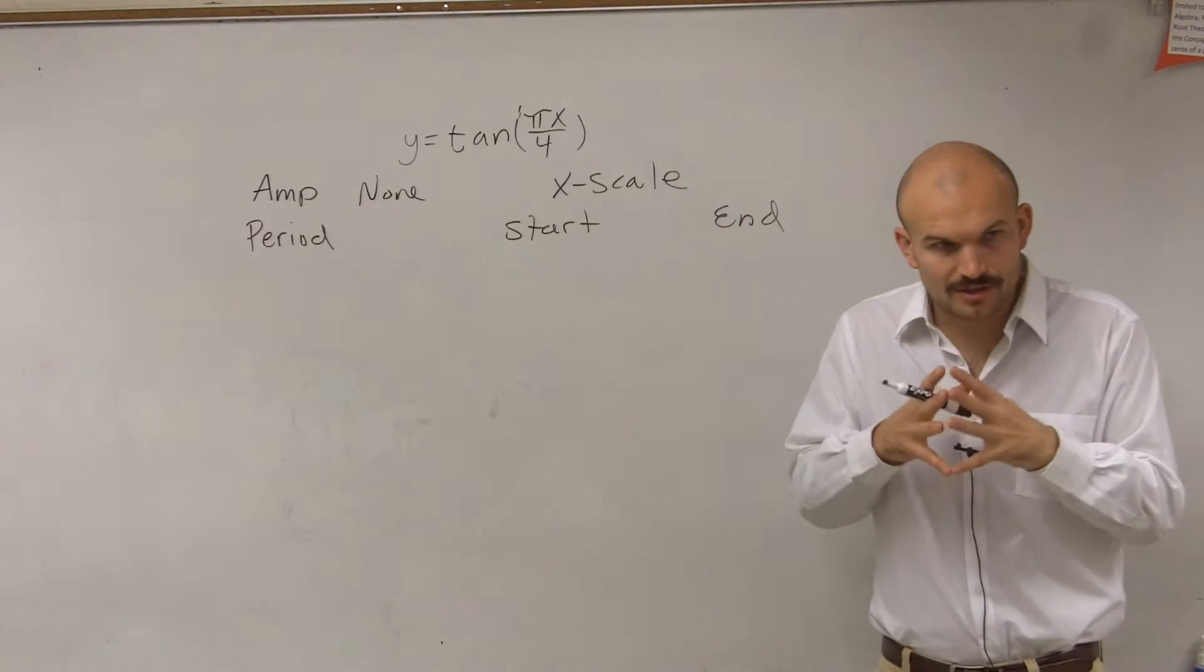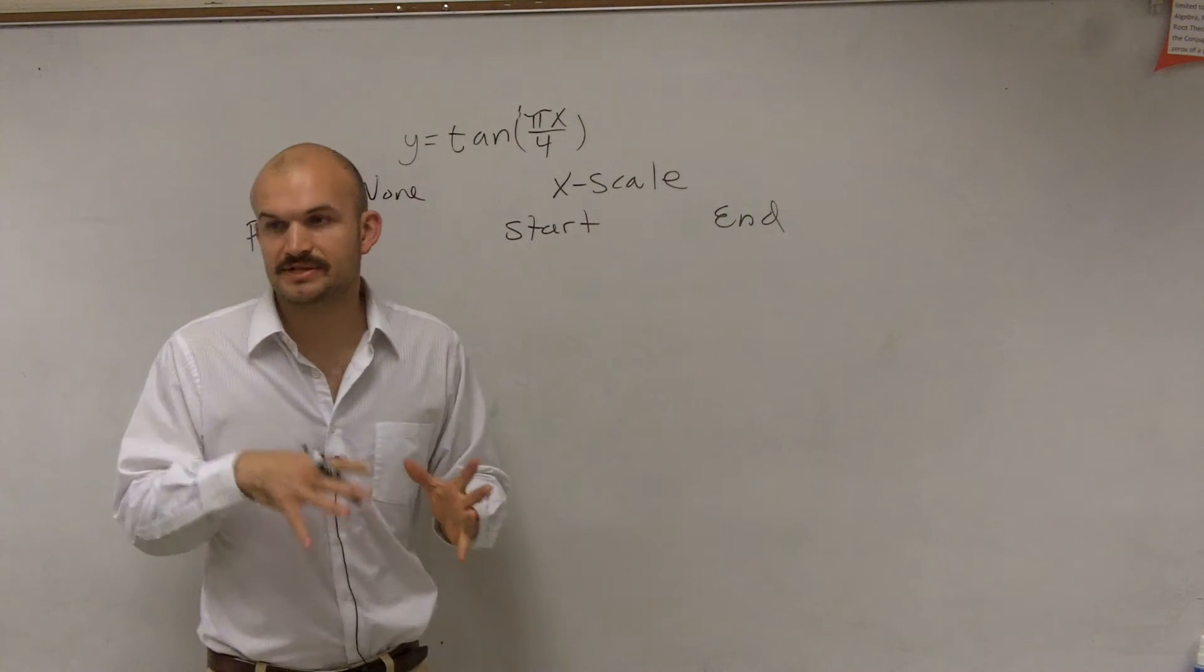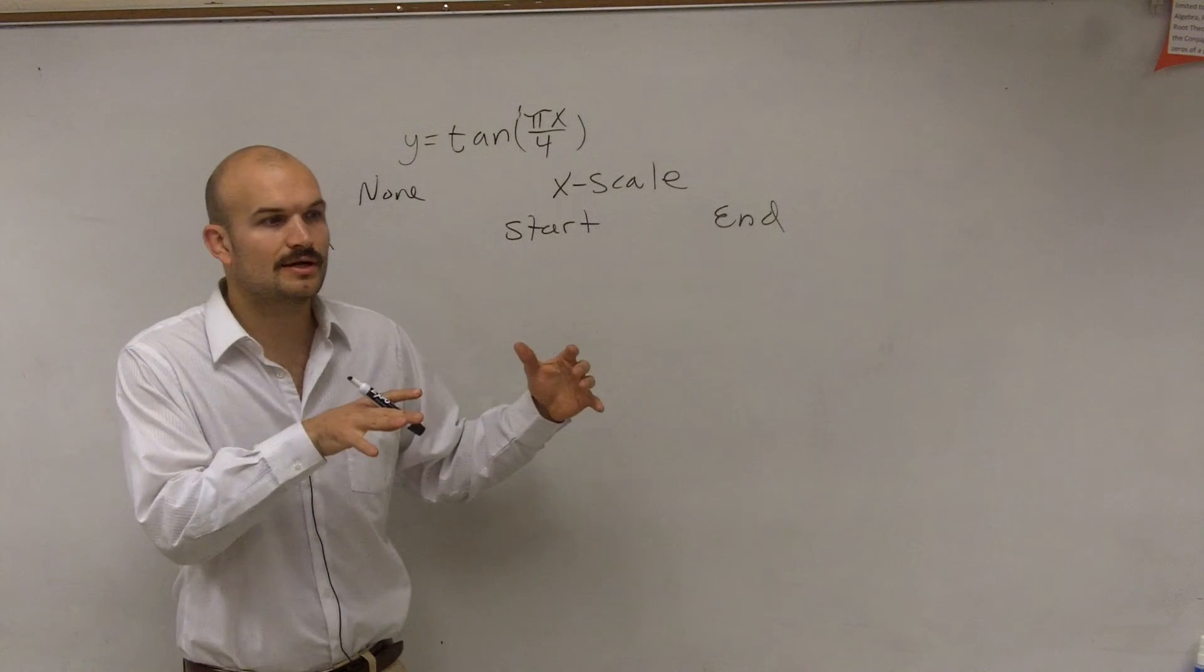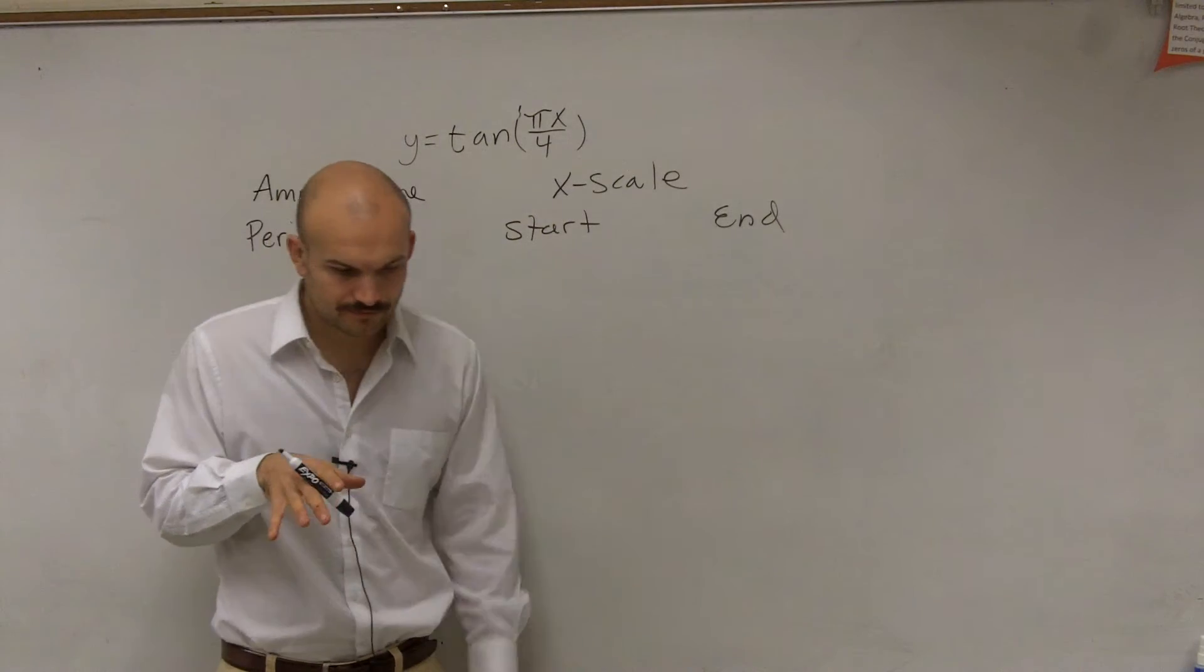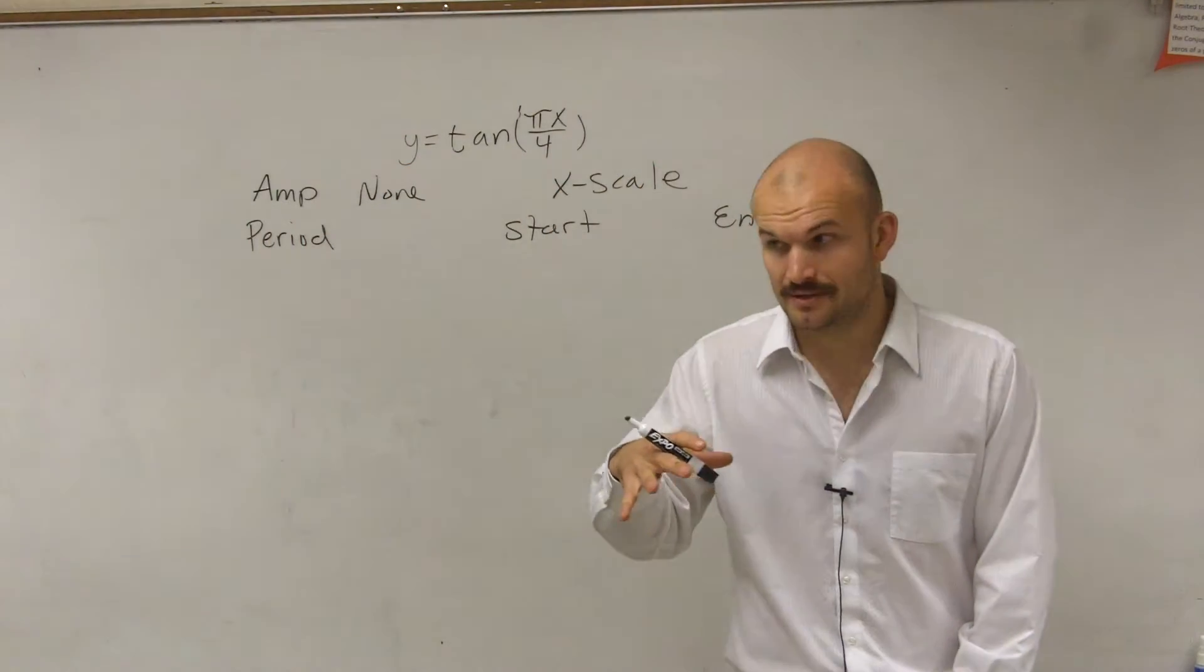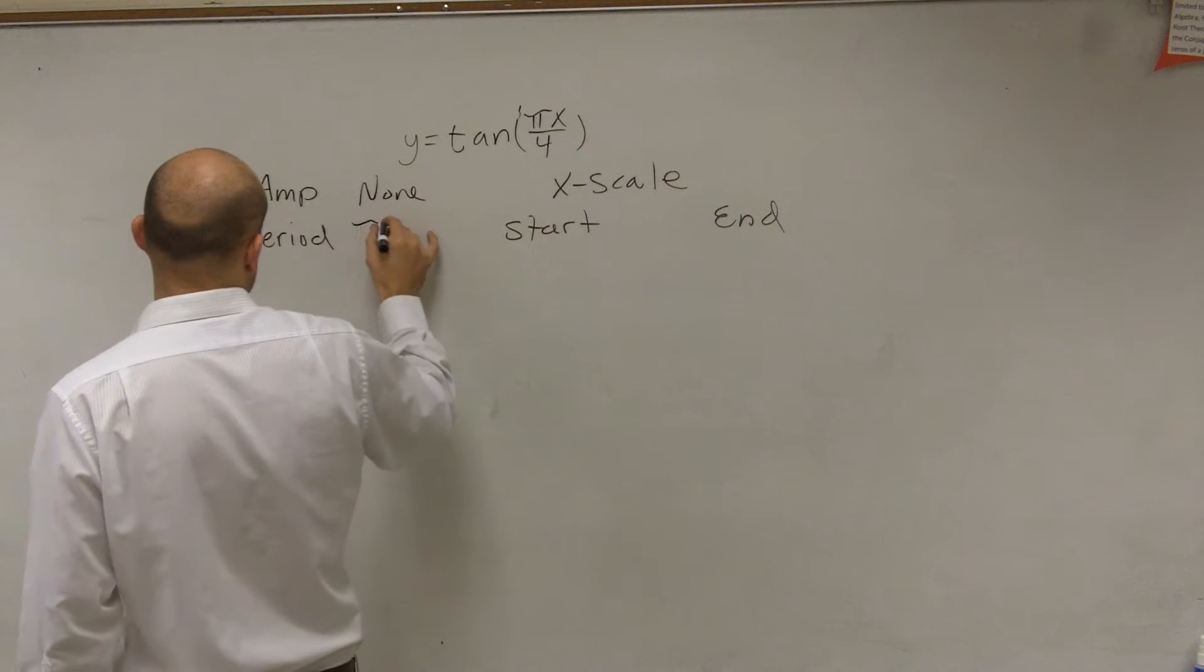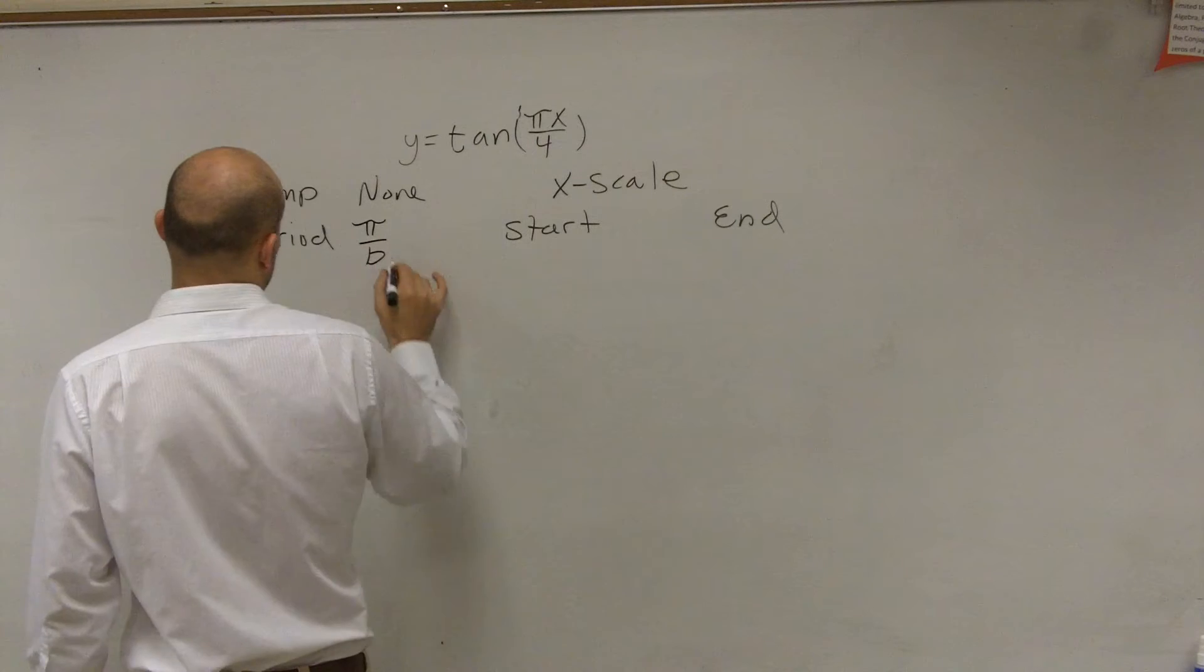But now, here's a little bit of difference. So if you guys remember, for sine and cosine and their reciprocal identities, we always took 2 pi and divided by b, correct? Now, for tangent and cotangent, all it's going to be is pi divided by b.